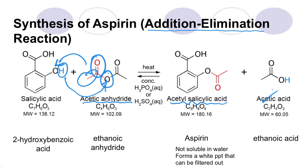If we go by the proper IUPAC names, salicylic acid is 2-hydroxybenzoic acid, the anhydride is ethanoic anhydride, and then we create aspirin and we create ethanoic acid.